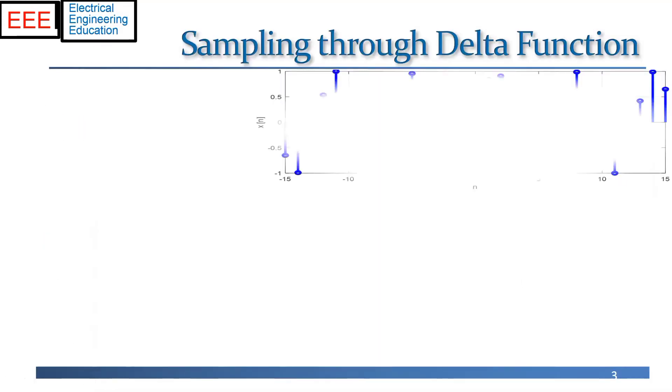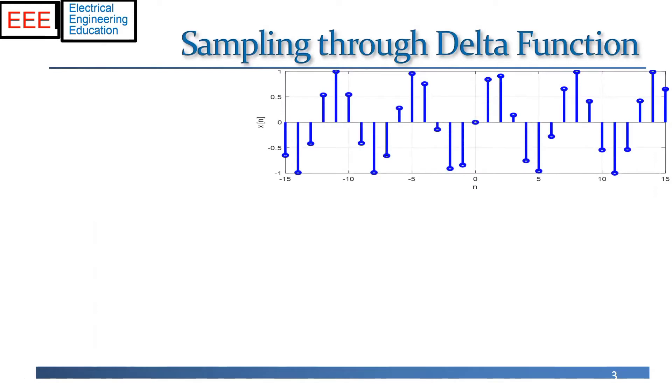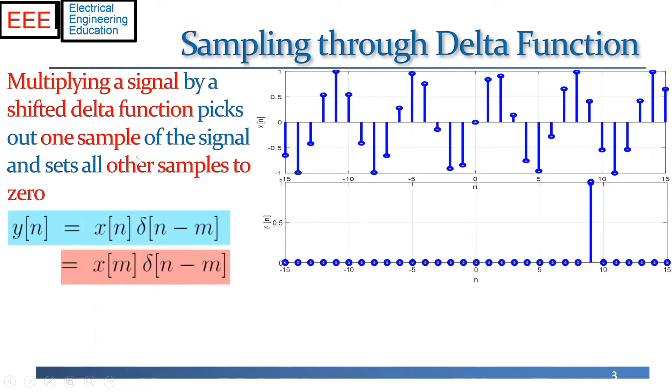Delta functions are very useful, and one of the reasons they're useful is for sampling signals. If we multiply a signal by a shifted delta function, it's going to pick out one sample of the time signal and set all the other entries to zero. And the simplest way to see this is just with some pictures.